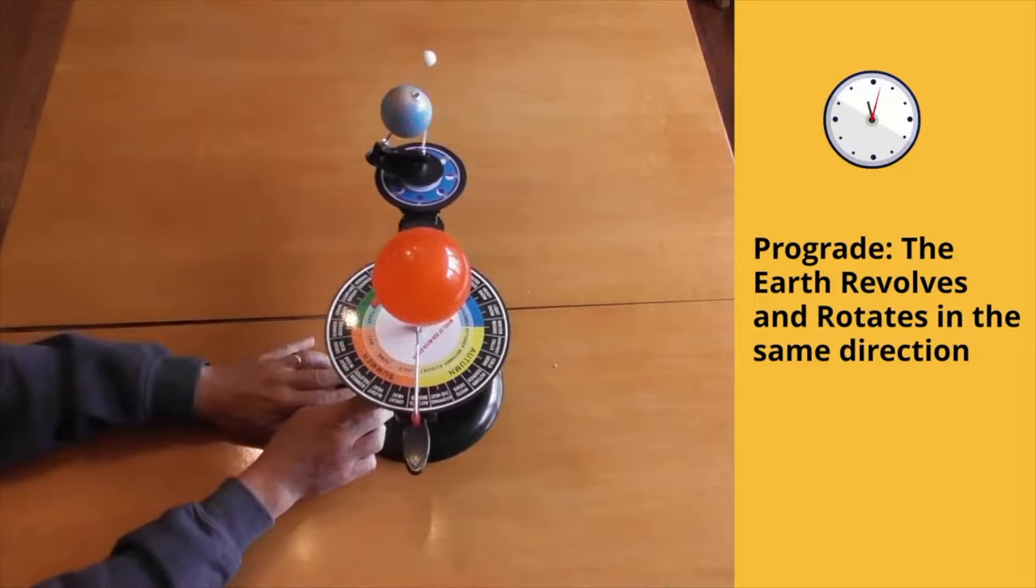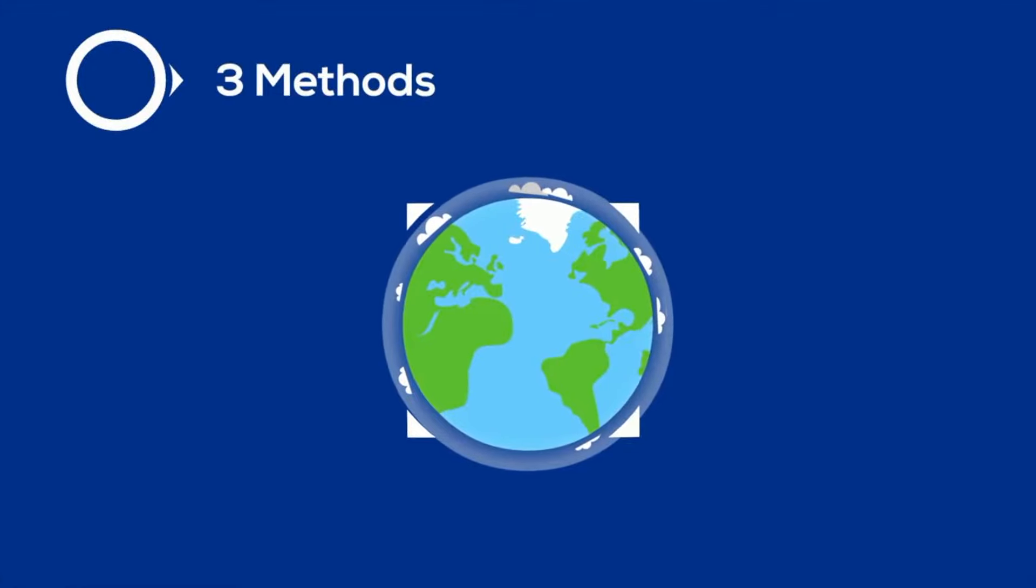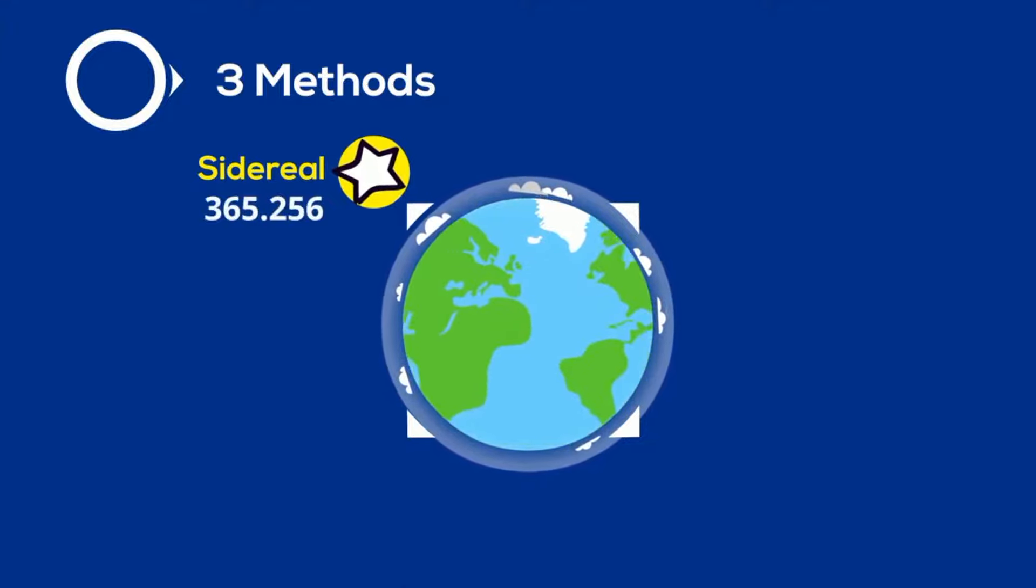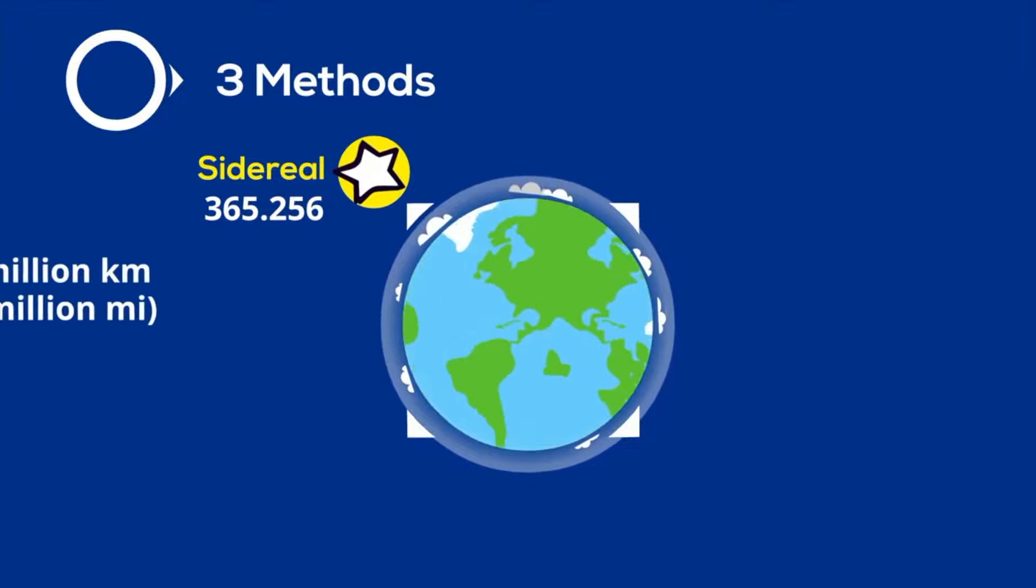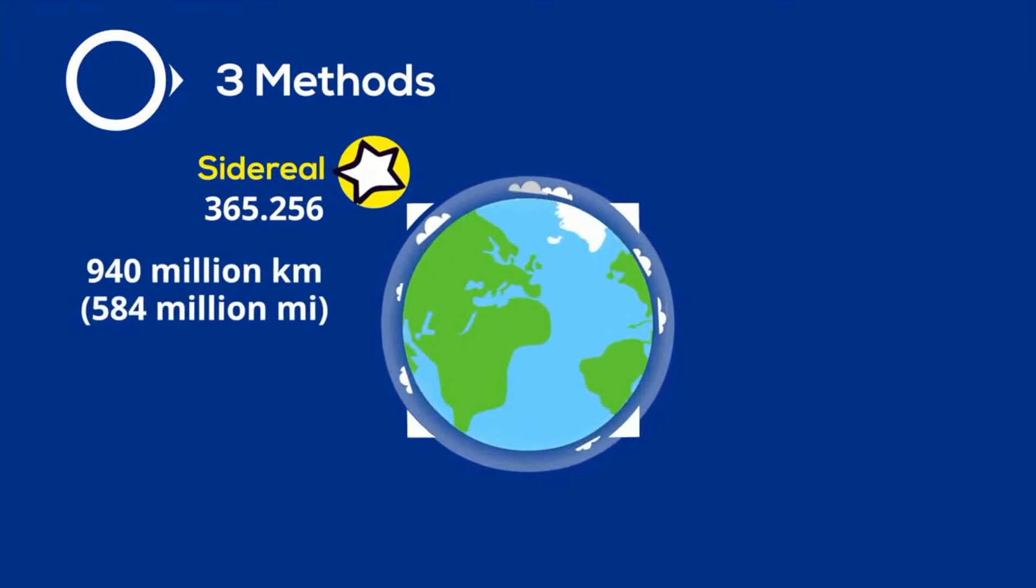There are actually three methods for measuring how long it takes for the Earth to revolve around the Sun. First, there is the sidereal method. One complete orbit takes 365.256 days, during which time the Earth has traveled 940 million kilometers, or 584 million miles.